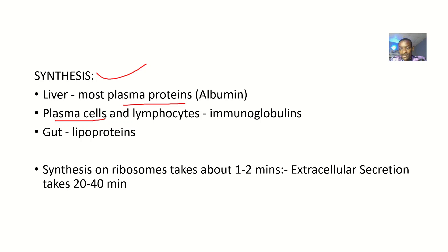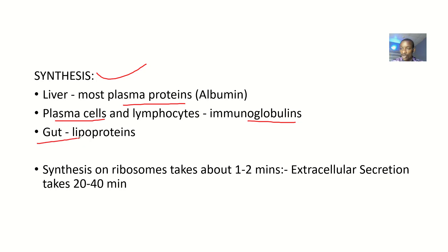Protein synthesis can also occur in plasma cells and lymphocytes, and that's where most of the immunoglobulins are formed. The immunoglobulins are used for immune purposes.